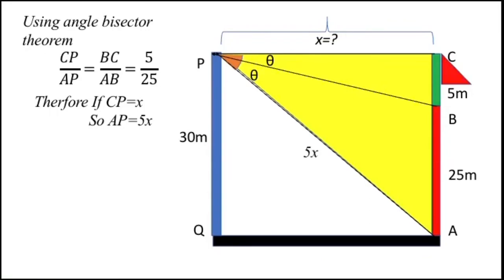So AP is 5x. Now if AP is 5x and PQ is 30, let us consider triangle APQ. In this triangle, we can use the Pythagorean theorem since AP is 5x, PQ is 30, and AQ equals x.